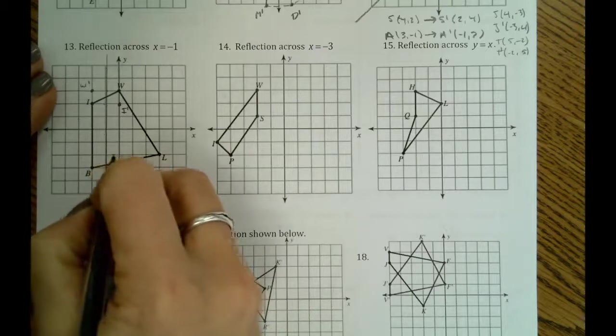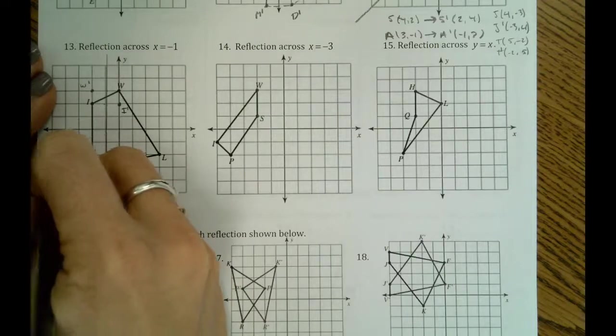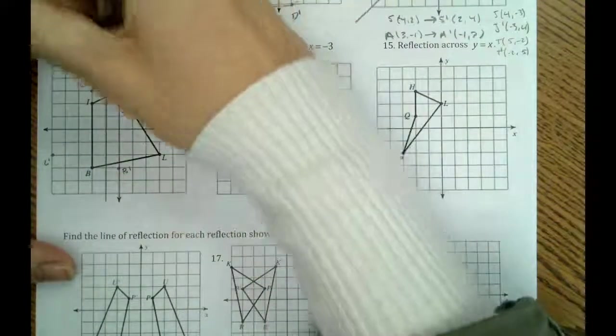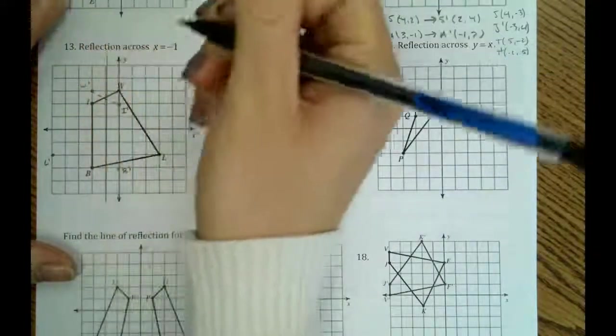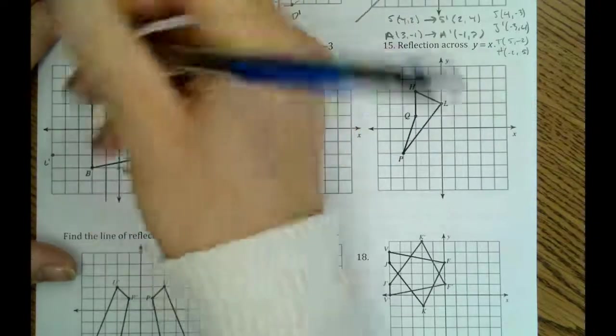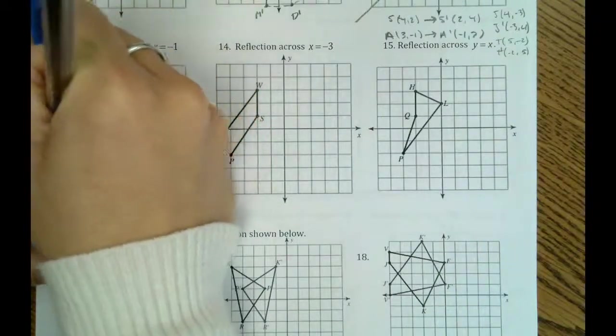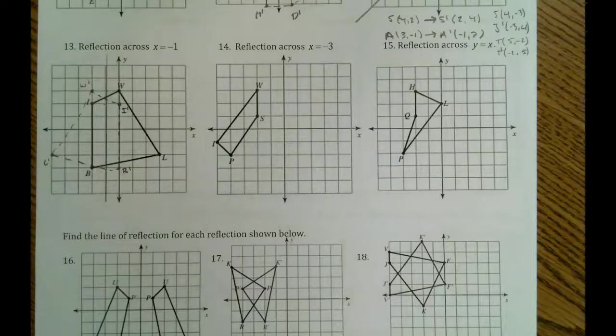And then l is 1, 2, 3, 4 away. So our new l is over here. Now we can connect those points. And so you can see that we reflected over the line x equals negative 1.